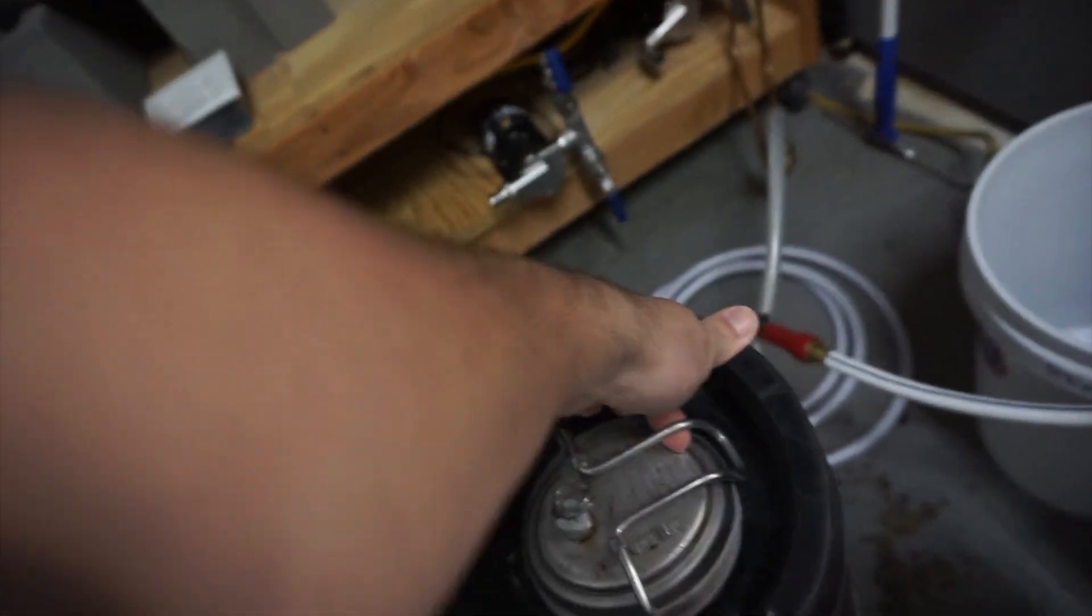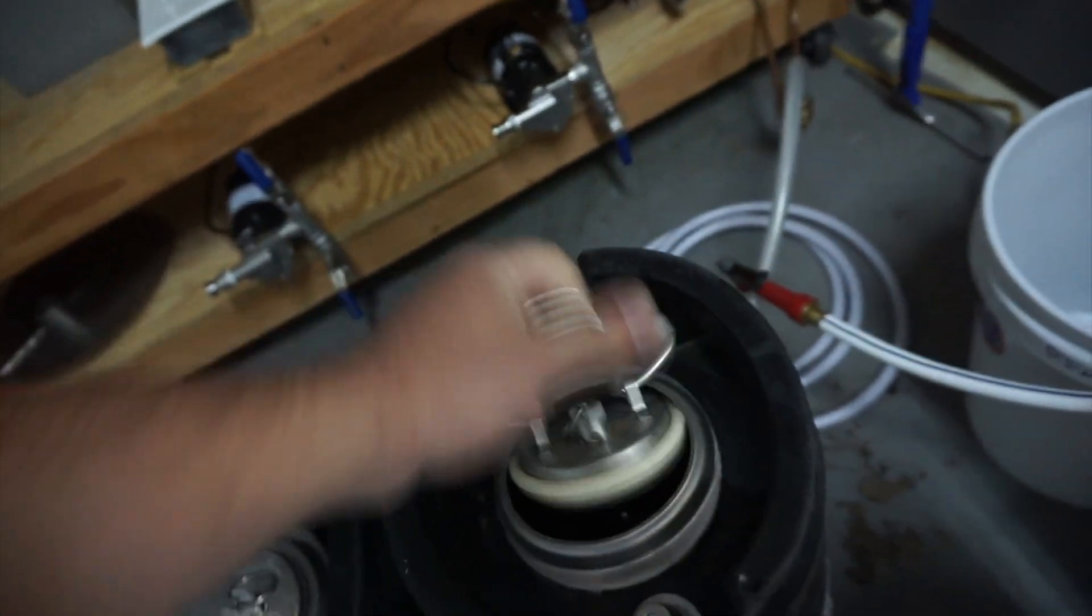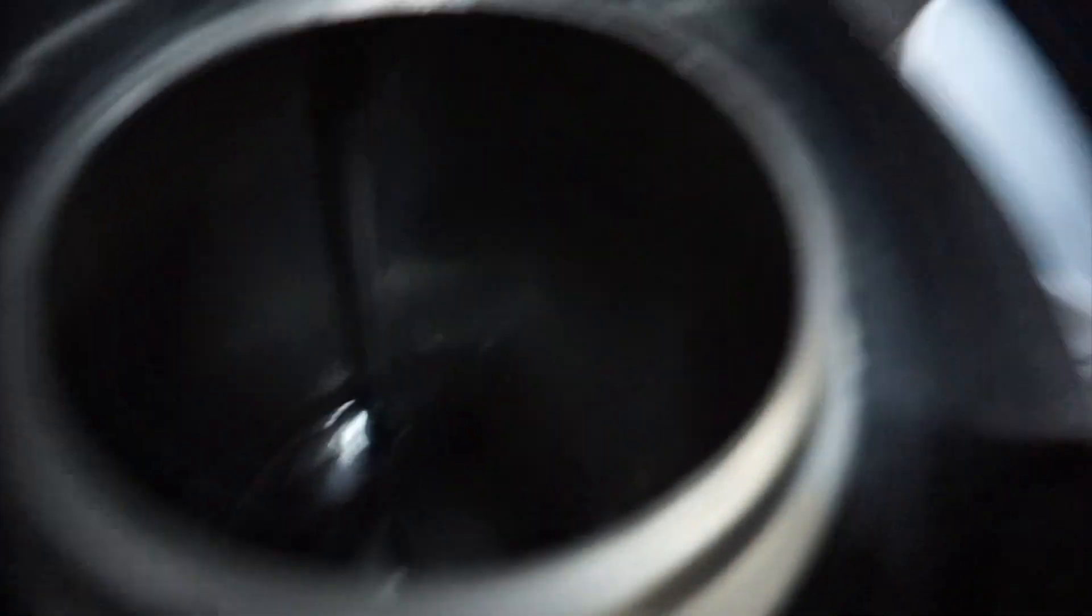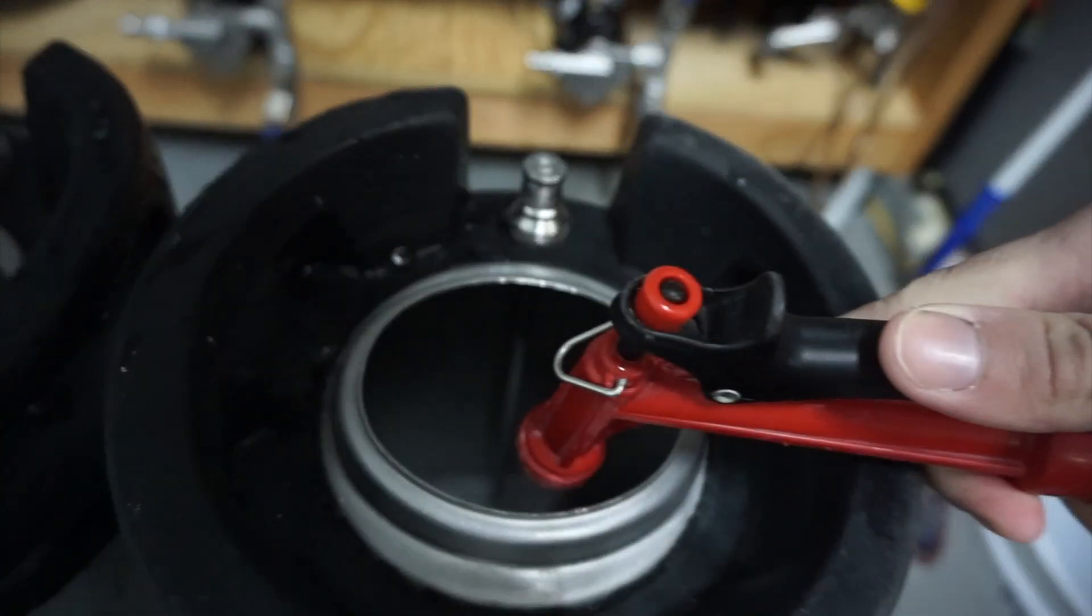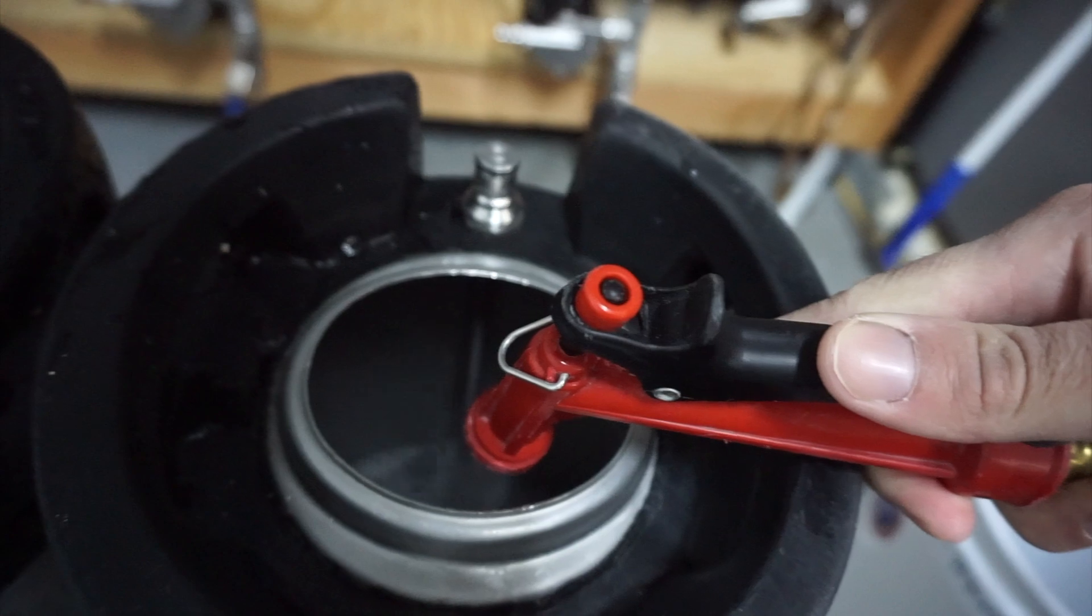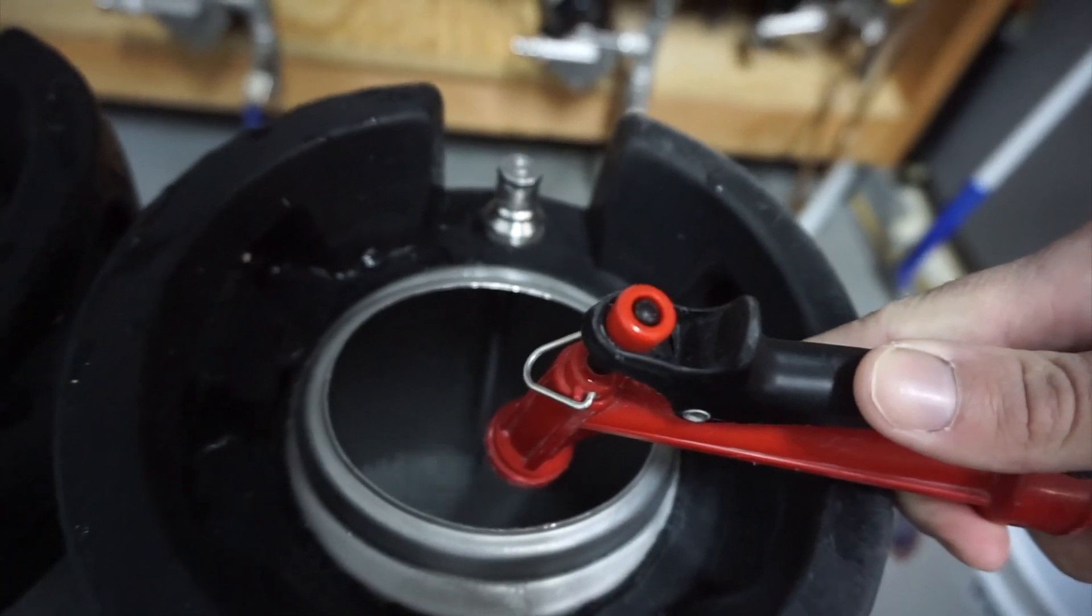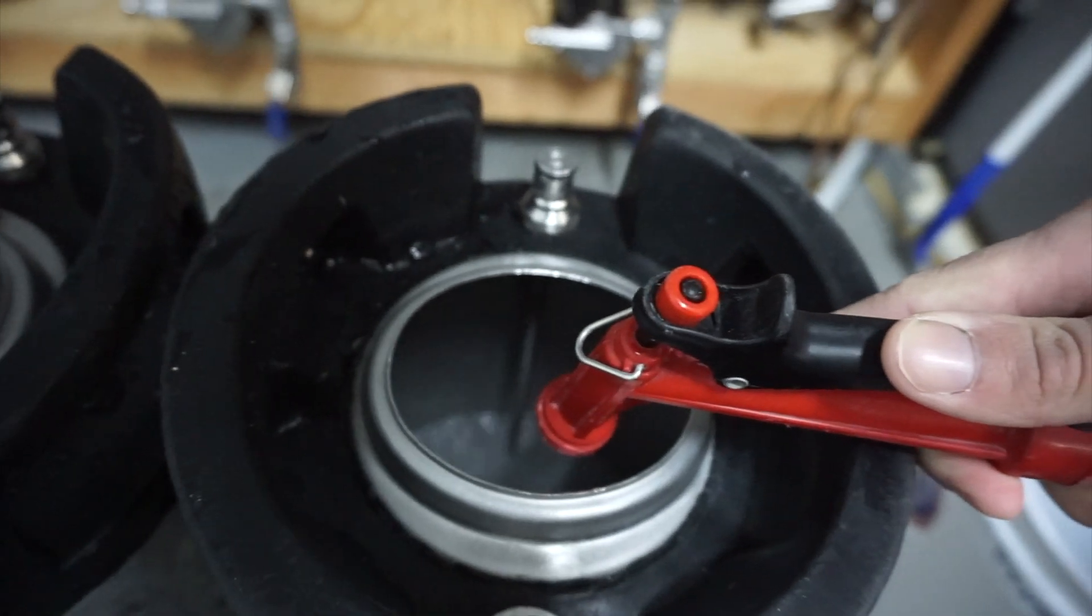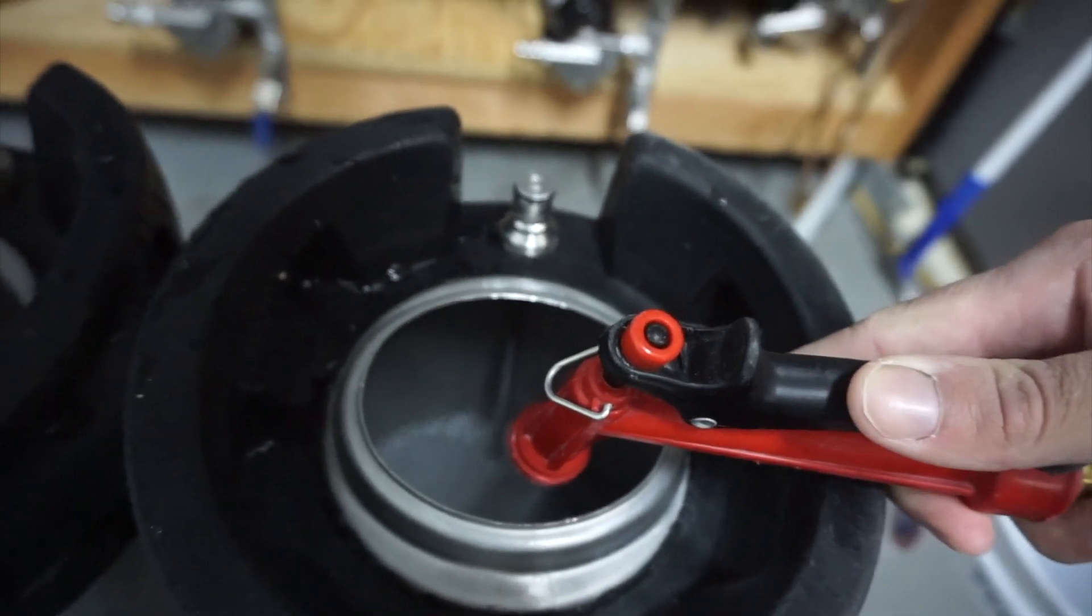So these are the two kegs I'll be using. They're already cleaned and what I just started doing was filling them up with some water. I like to fill it up the majority of the way, pour the Star San in, and then pour the rest, because if you do the Star San first you're gonna have foam absolutely everywhere.